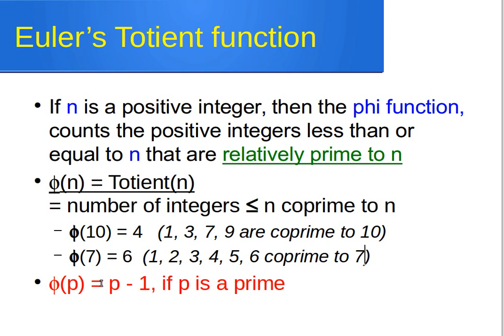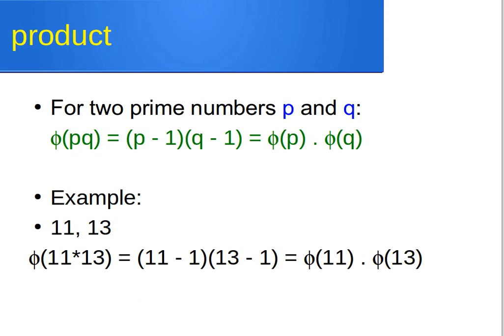For another example: 11 is a prime number, so the Totient of 11 is 11 − 1, which is 10.